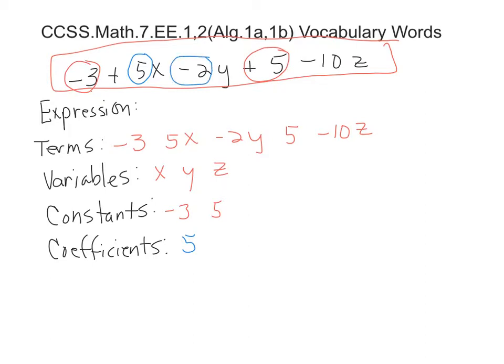This is a coefficient, negative 2. It is the number part of that term. And then the last coefficient would be negative 10. So these two are kind of confusing. I think the hardest one is the coefficient. It is the number part only of the term.